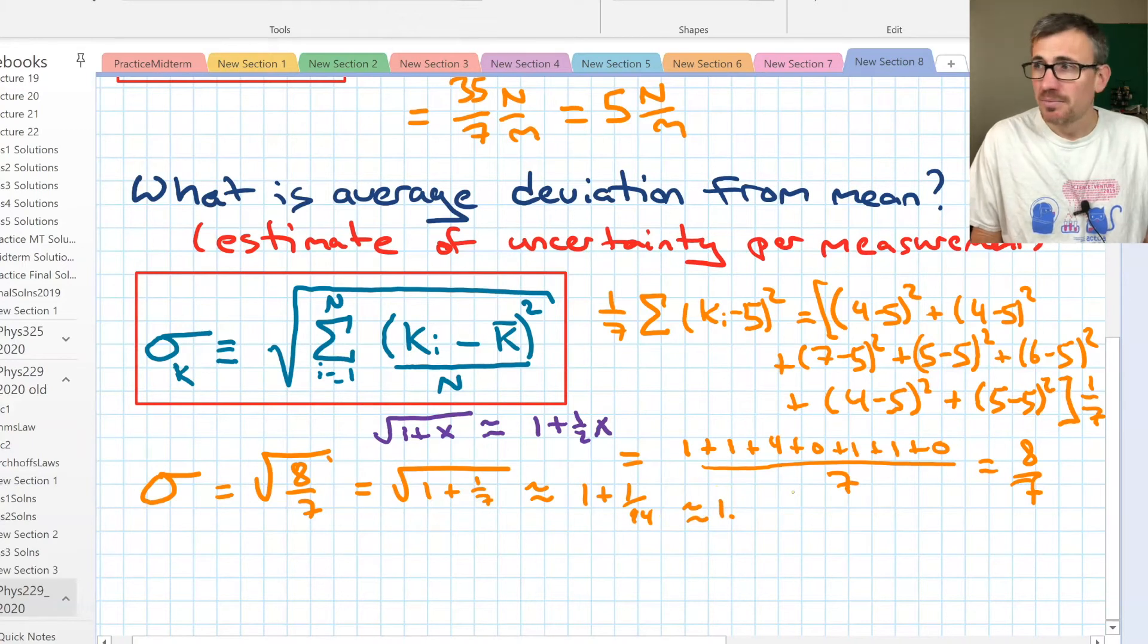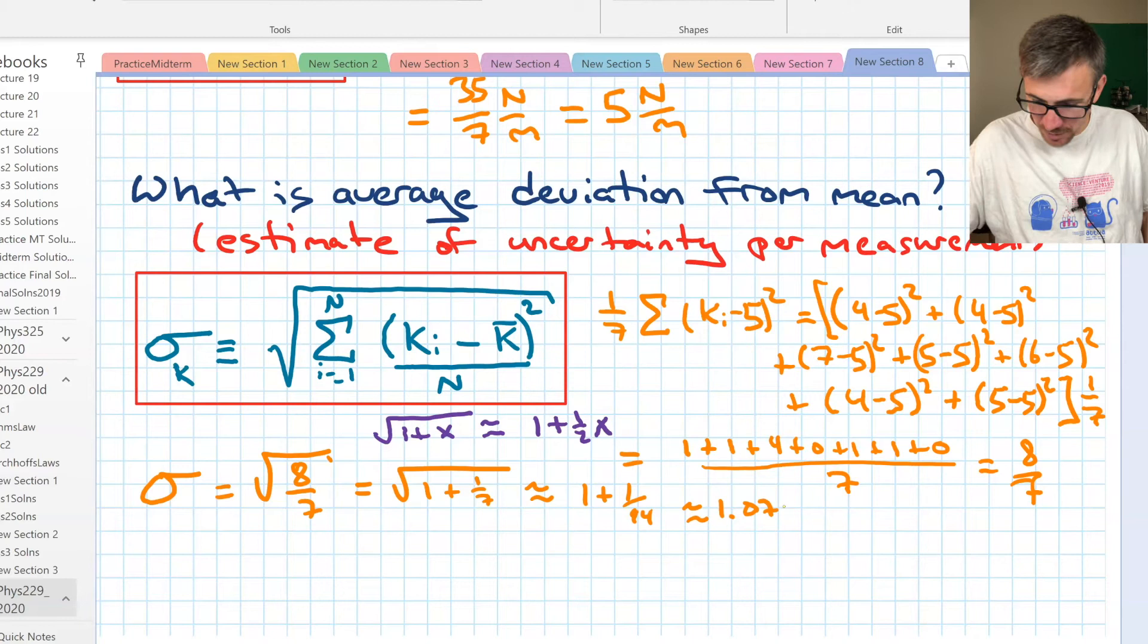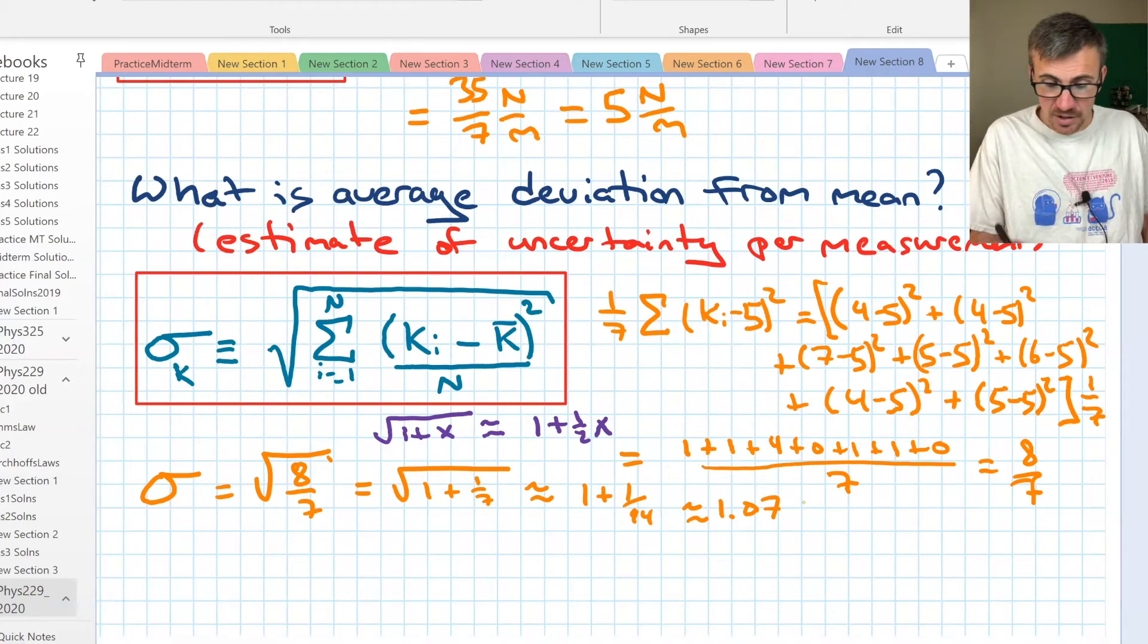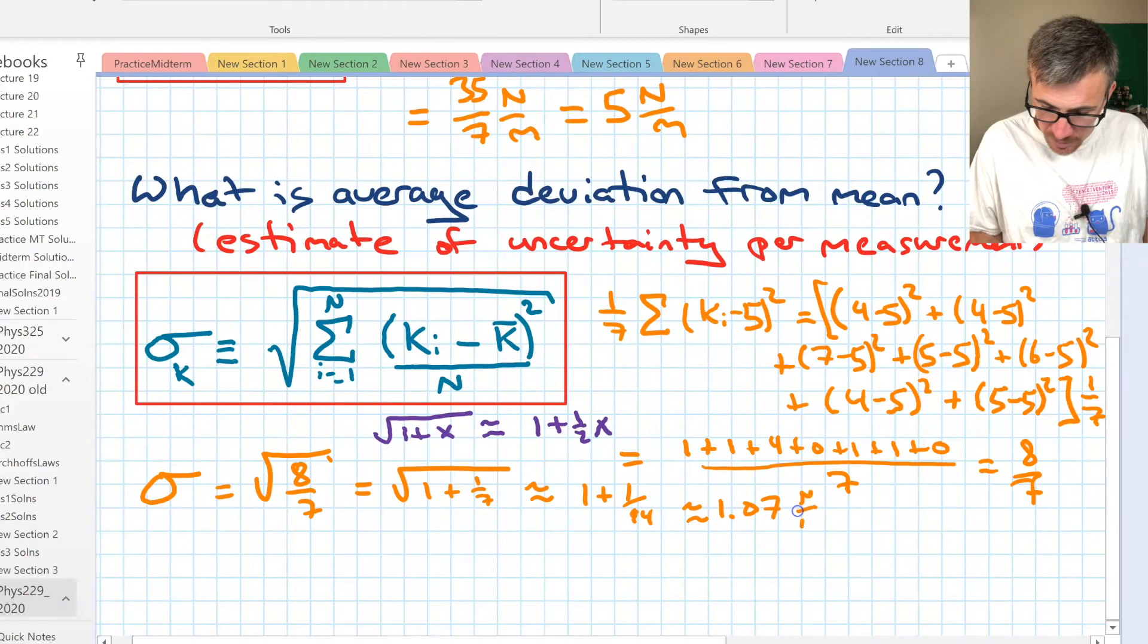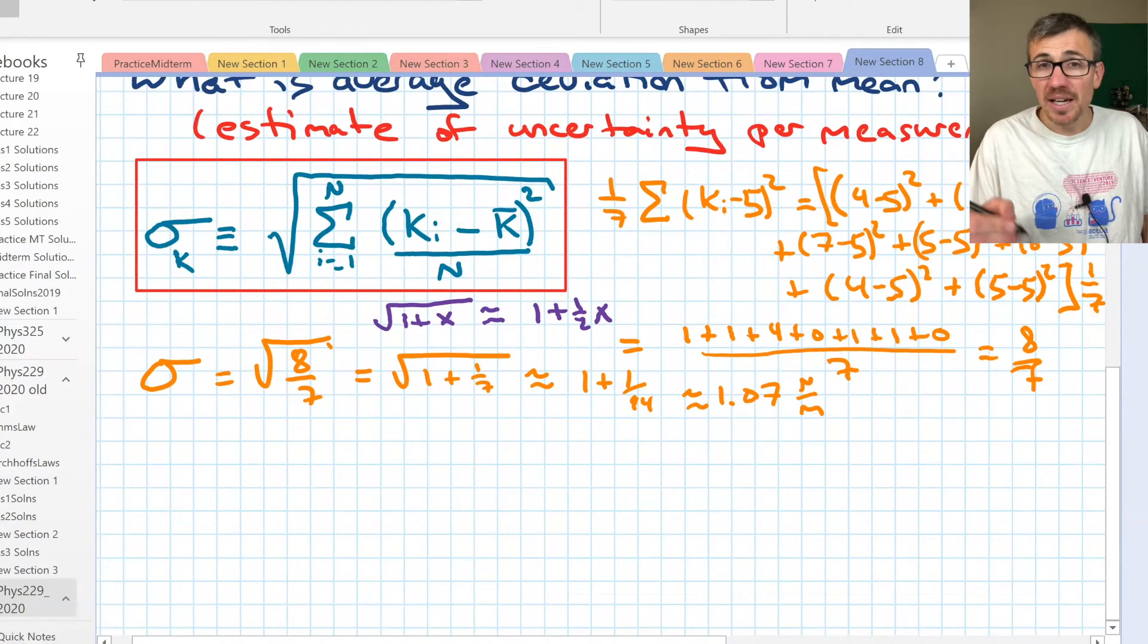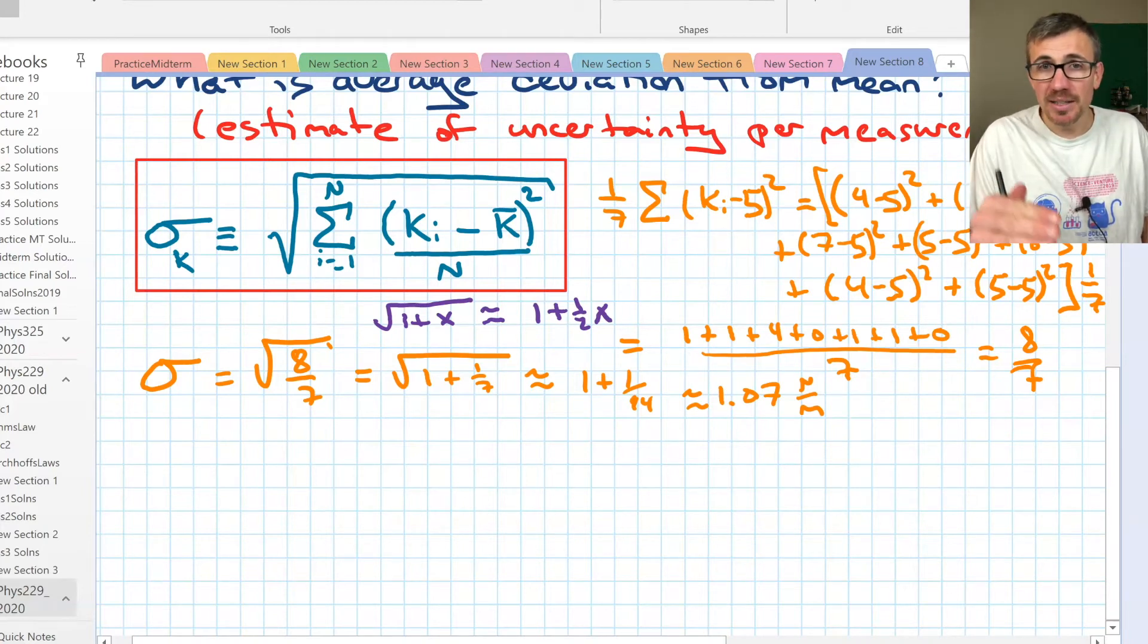So that's going to be 1.07. What are the units? Well, it's a square root of k squared, so it's just the same units of k, newtons per meter. This is our standard deviation. In this example, our average deviation from the mean is just under 1.1 newtons per meter. That's not bad. That's how much we expect each measurement to vary.